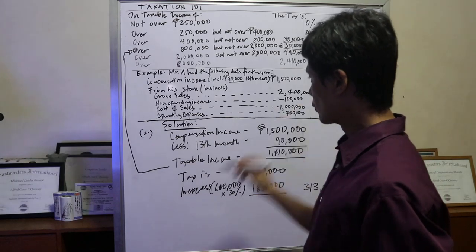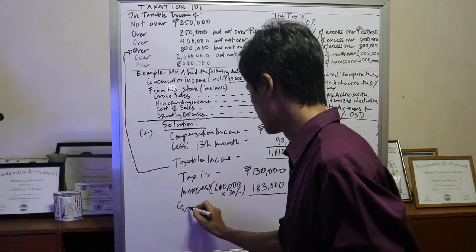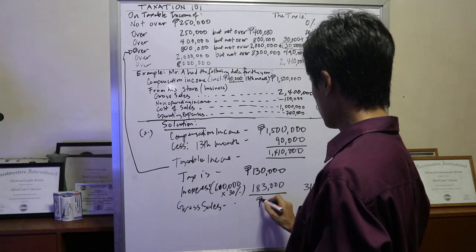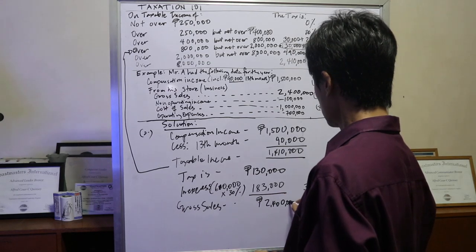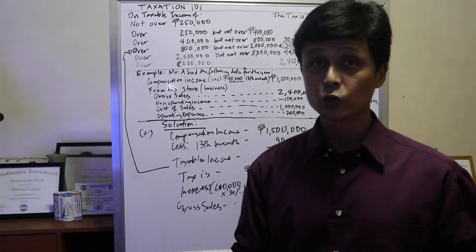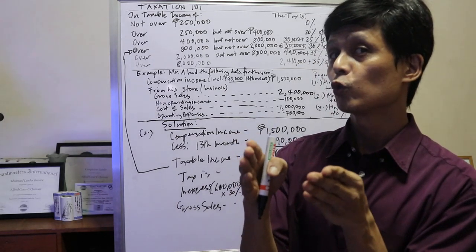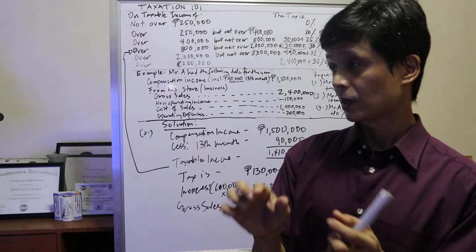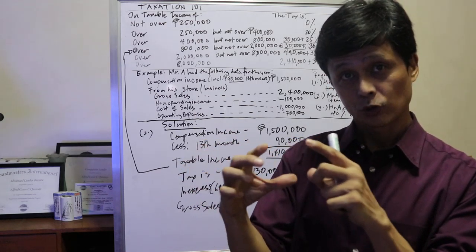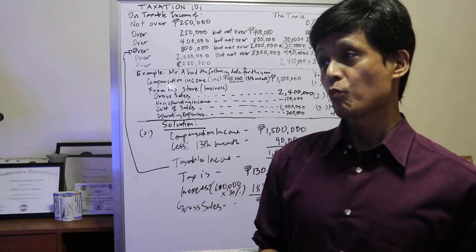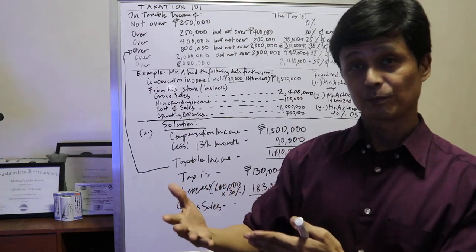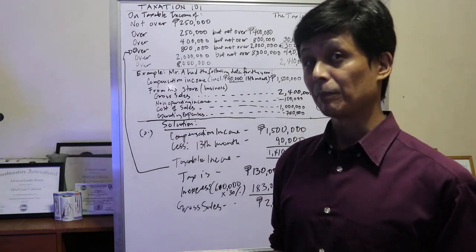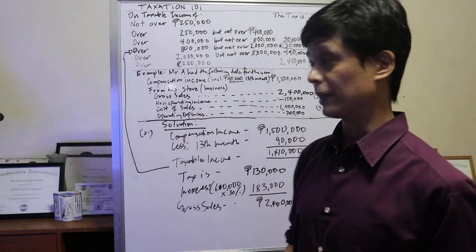So now we go to the gross sales. Gross sales, dito naman sa business. The gross sales would be 2.4 million. Now, since we're using itemized deduction, meaning ito yung mga actual cost and expenses ng company. Kung masinop ka mag-tago ng mga resibo at mga vouchers na yan, pwede mong gawing deduction yan. Parang pag-check ng BIR, tama. At baka mas makababa ka pa ng tax na babayaran.